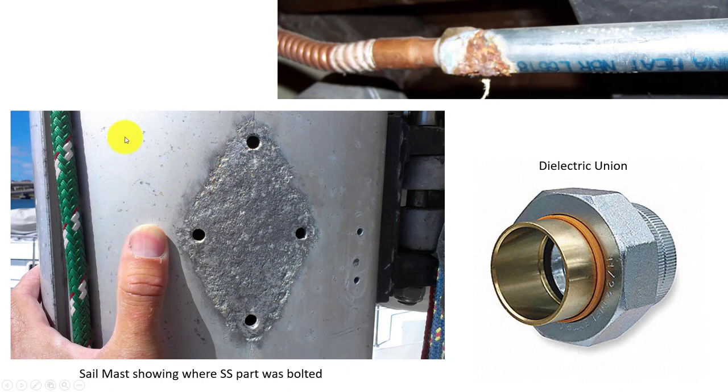Another good point is maybe an aluminum mast on a sailboat where we put a stainless steel piece of hardware on here, and this has been removed. The salt water gets in there and sets up a galvanic cell in between there.